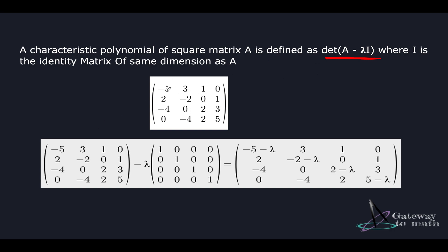The matrix given to us is: minus 5, 3, 1, 0, 2, minus 2, 0, 1, minus 4, 0, 2, 3, 0, minus 4, 2, and 5.